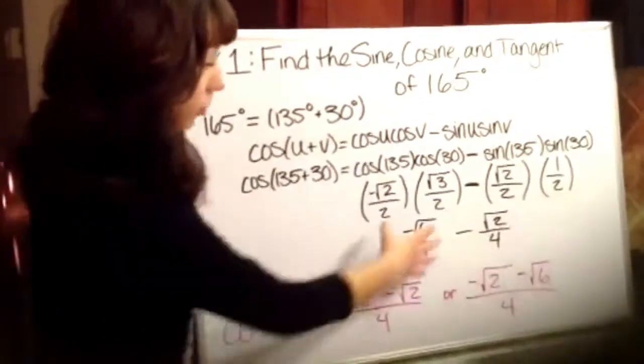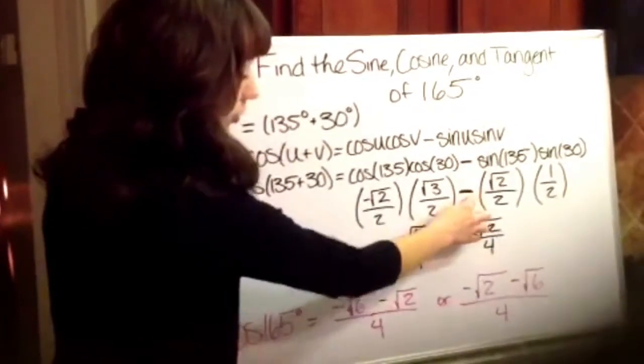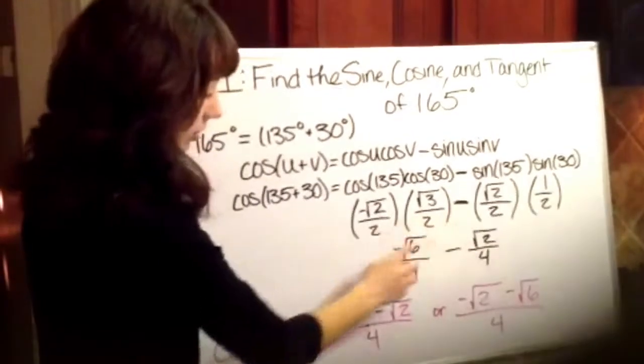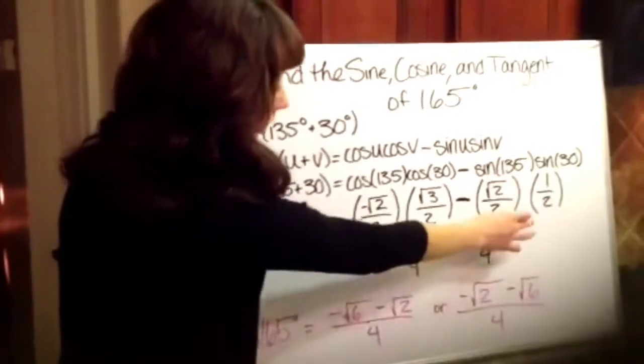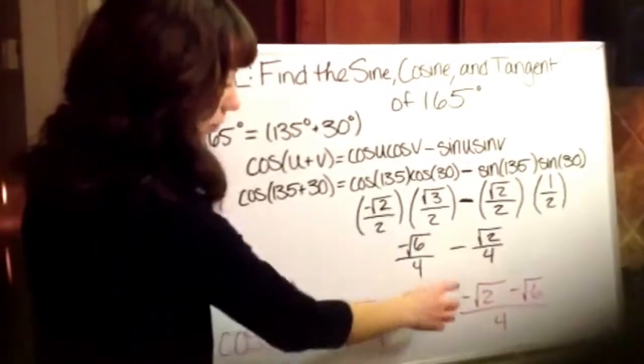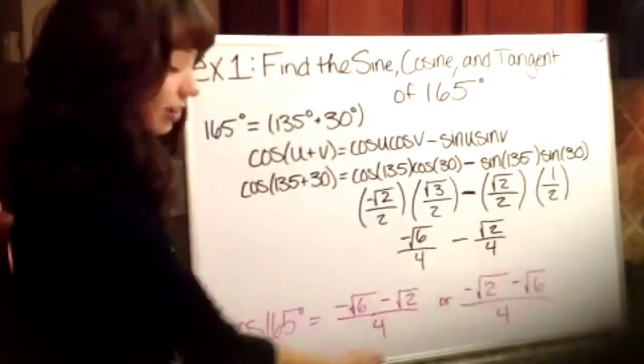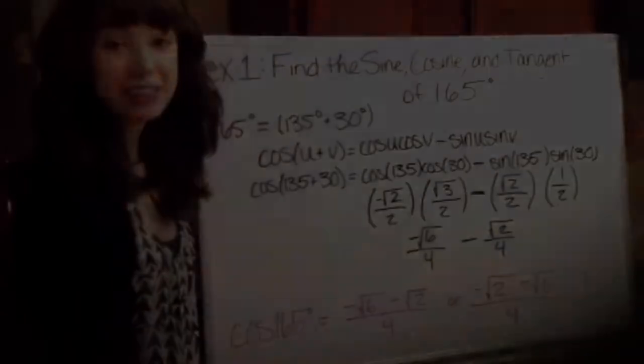And then you're going to multiply these two. And make sure you don't multiply it all together because that's subtraction right there. So when you multiply these, you're going to get negative square root of 6 over 4. And then when you multiply these, you're going to get square root of 2 over 4. And then you want to subtract them because you have the same denominator now. And then you end up with either one of these answers because you can switch the placement of it.